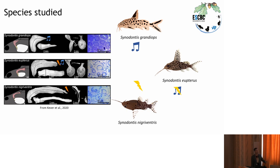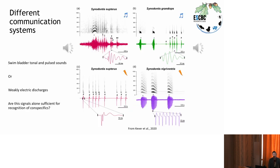This family of catfish offers a unique opportunity to study closely related species that produce different sensory cues, which they might use for social recognition. Some produce swimbladder tonal and pulsed sounds — this is the case for eupterus and grandiosus. Others produce weakly electric discharges — again the case for eupterus and also nigriventris. But the question was: are the signals alone sufficient to enable them to recognize conspecifics? Before answering this, I have to answer a simpler one: can they recognize conspecifics at all?